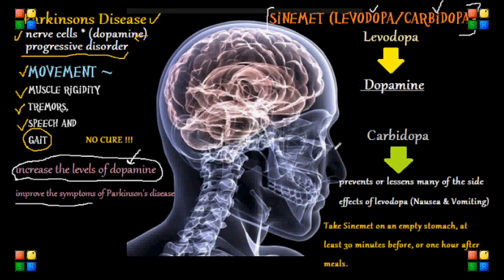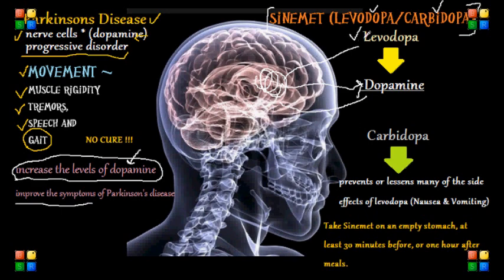With levodopa, it basically enters the brain and is converted to dopamine. Levodopa is transported to the nerve cells within the brain that produce dopamine, and it is then converted into dopamine for the nerve cells to use as a neurotransmitter, therefore increasing the dopamine levels of our patient.